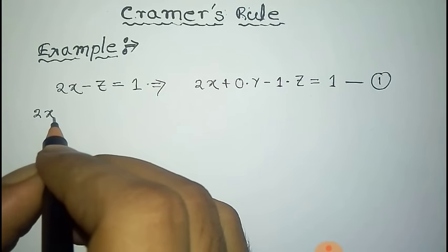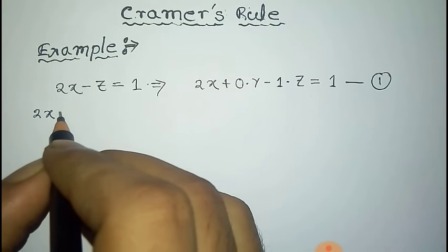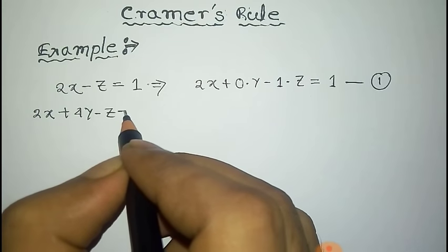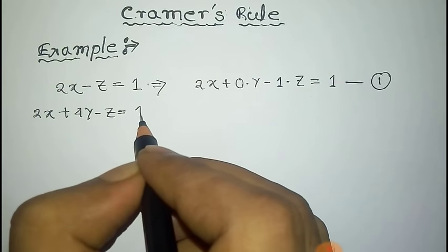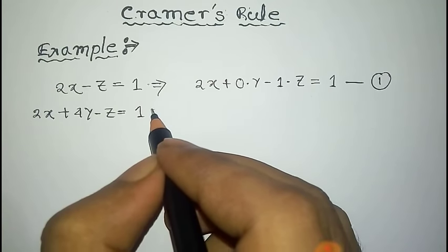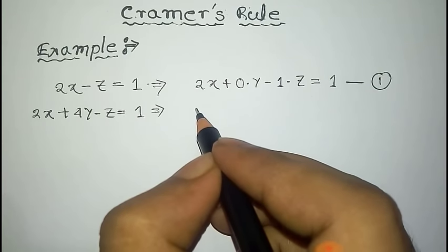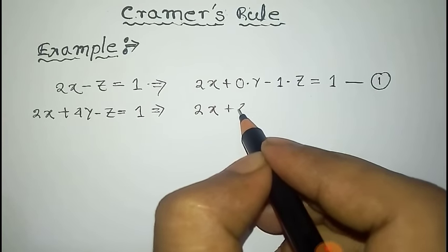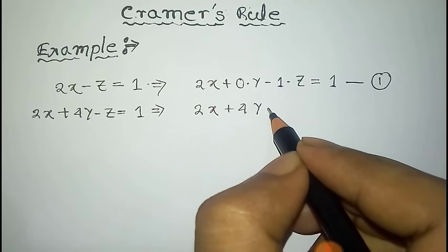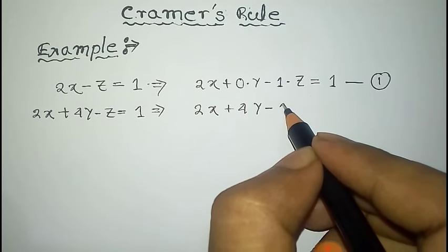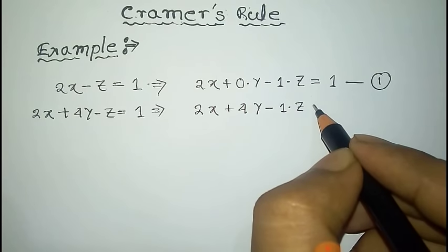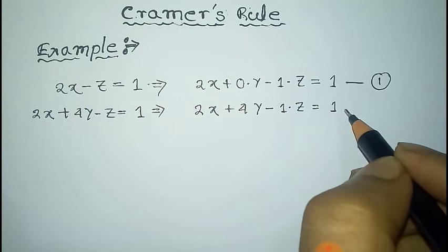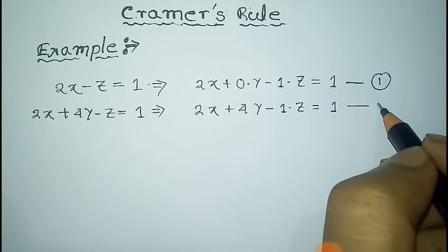The second equation is given by 2x plus 4y minus z equal to 1. We can also write this as 2x plus 4 into y minus 1 into z, that is equal to 1. This is the second equation.